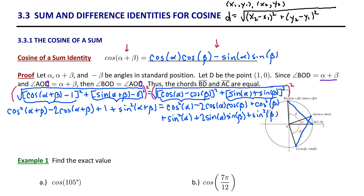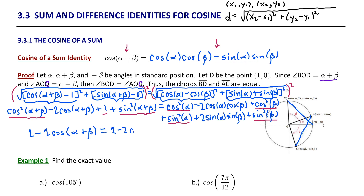Working back to the left side, notice we have cosine²(α+β) plus sine²(α+β). Applying the Pythagorean identity, we know that sum is 1, and combining that 1 with the one already present simplifies the left side to 2 minus 2·cosine(α+β). On the right, cosine²α plus sine²α equals 1, and cosine²β plus sine²β equals 1. Combining those gives a constant of 2, and then we have minus 2·cosine α·cosine β plus 2·sine α·sine β.